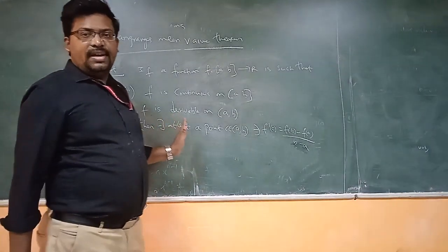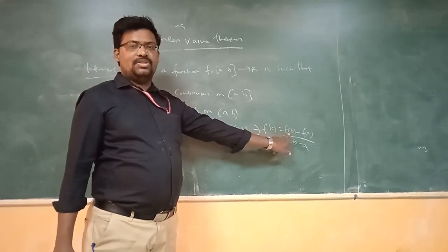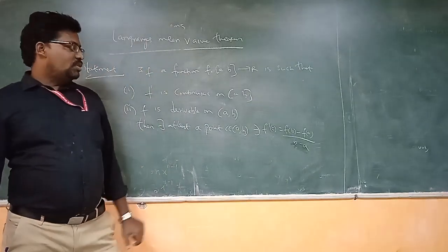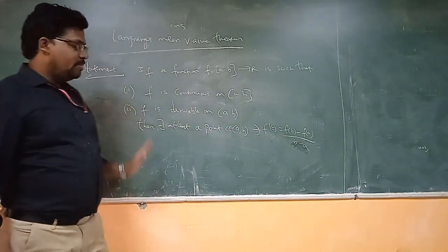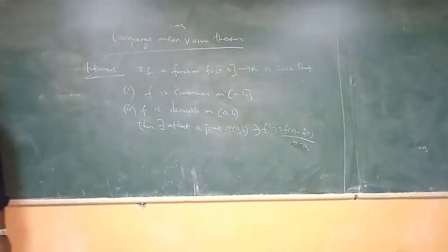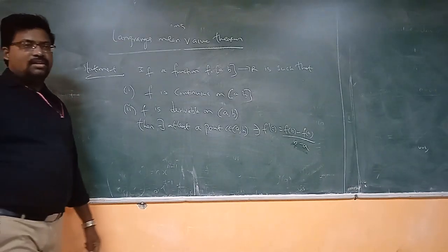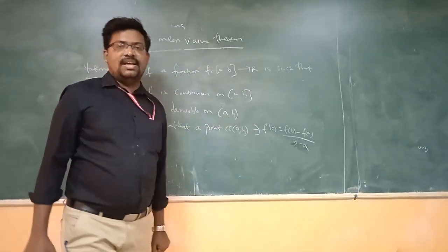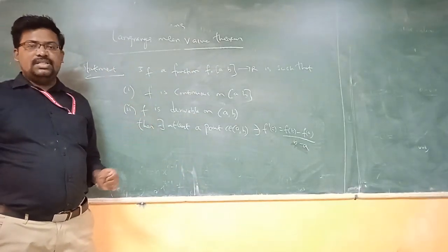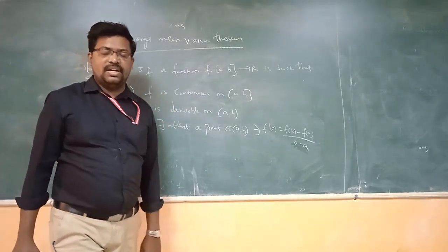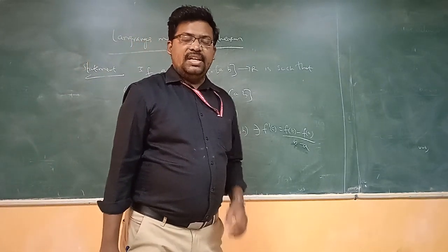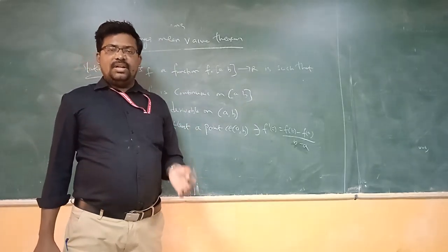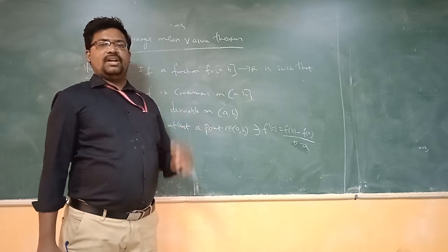Now here, the derivative f'(c) is not equal to zero, so it is not parallel to the x-axis. So f'(c) equals f(b) minus f(a) by b minus a. Now, Lagrange's theorem is verified only if all conditions are satisfied. If even one condition is not satisfied, then Lagrange's theorem is not verified. Conversely, all conditions must be satisfied for the theorem to be verified.